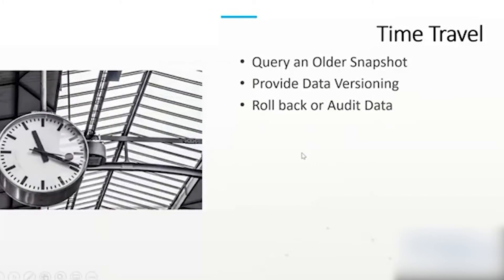With time travel, Delta Lake is also known for the ability to go back and create older versions of data very easily, just by using either a version number or a timestamp. We can go back and look at past data in our Delta table and reason about that data — maybe roll back or audit the data, or perhaps you did a machine learning experiment on a particular version of the data and you want to roll back to that version to repeat the experiment. There are lots of reasons to do time travel, and Delta makes it very easy to query and get the history of your data.